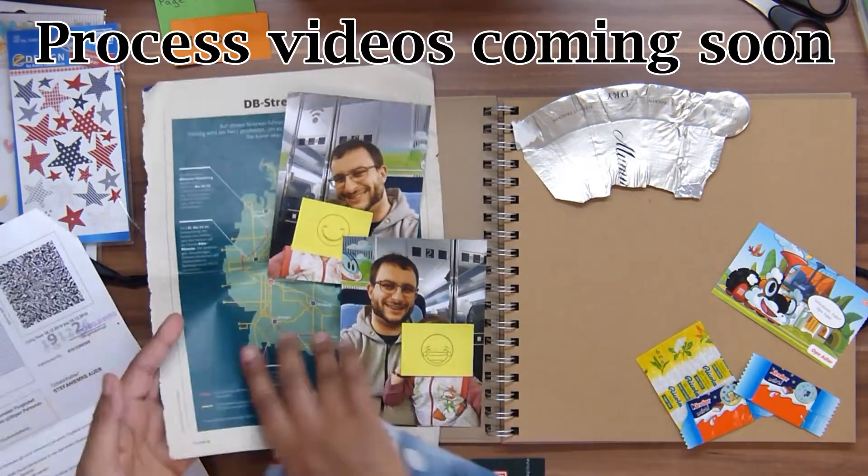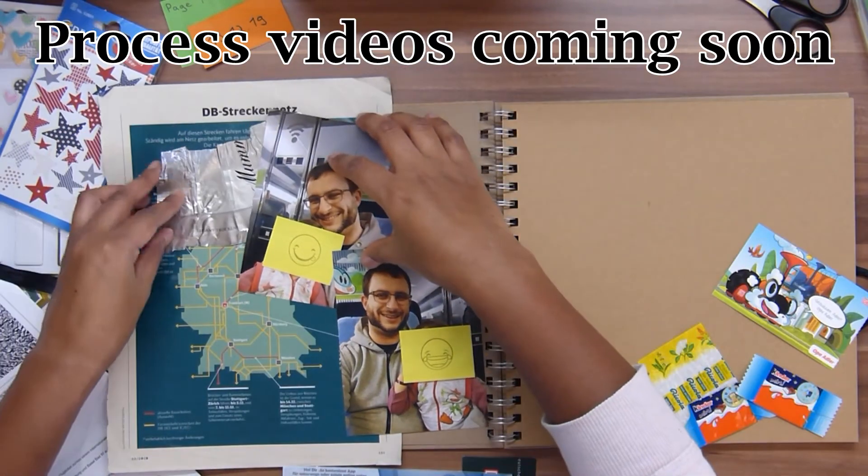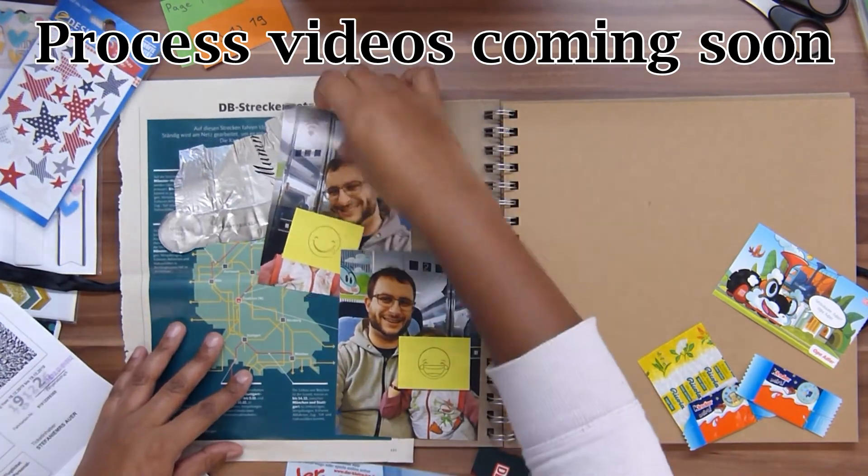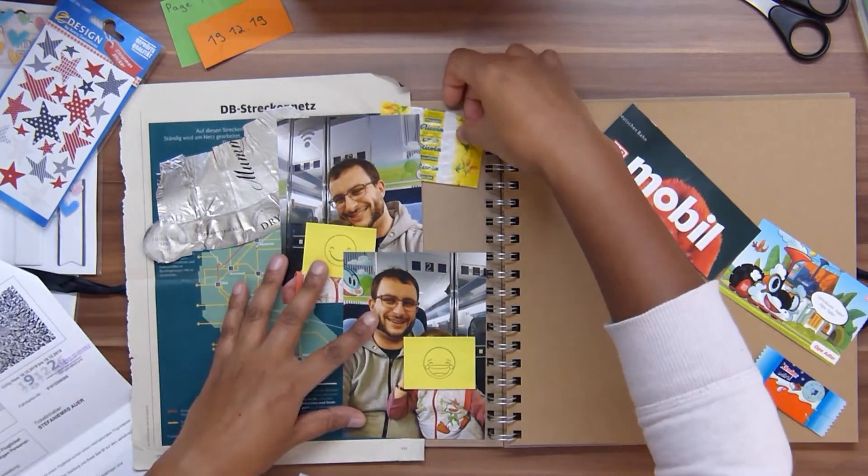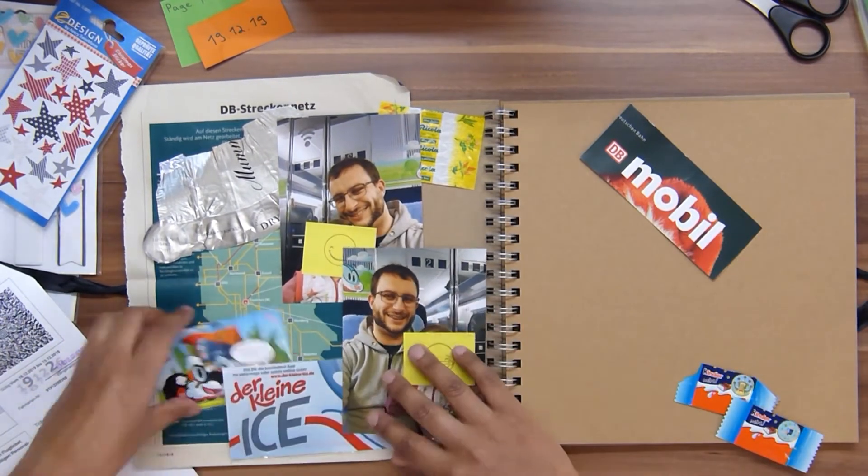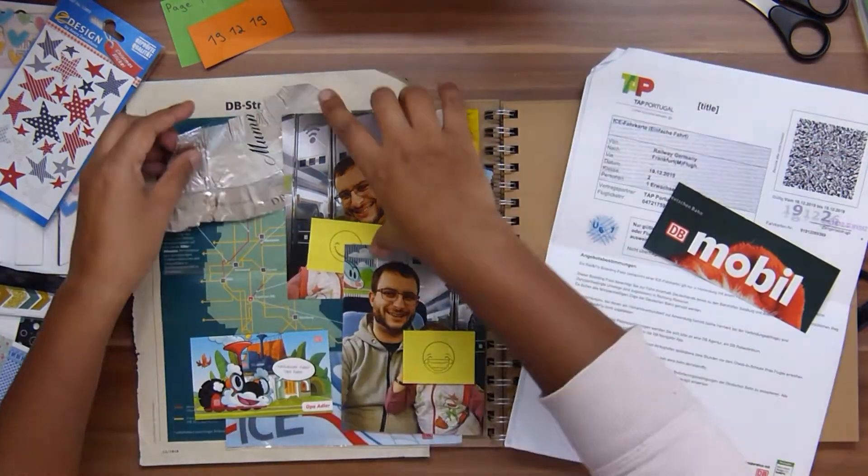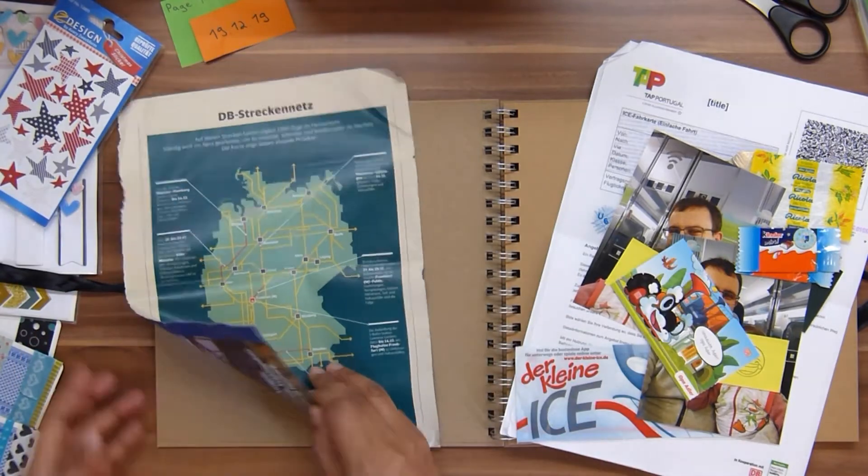Every time I do a travel scrapbook, the first two to three pages are the hardest. You have to get a feel for how you want this travel scrapbook to look like, what style you're going to be using, if you want to do a lot of journaling or not, what type of titles you want to do, and how thick it's going to get.